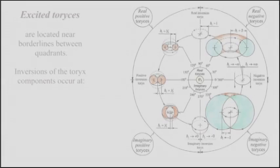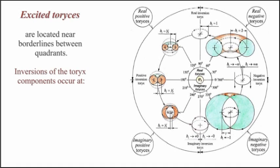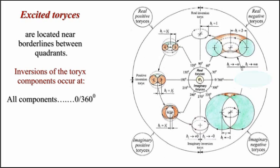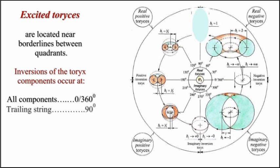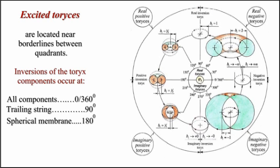Excited Toreases are located near border lines between quadrants. Convergence of the Torex components occurs at: all components 0 degrees; trailing string 90 degrees; spherical membrane 180 degrees; and leading string 270 degrees.